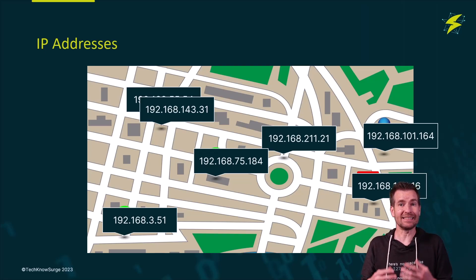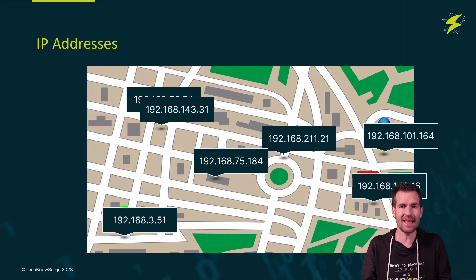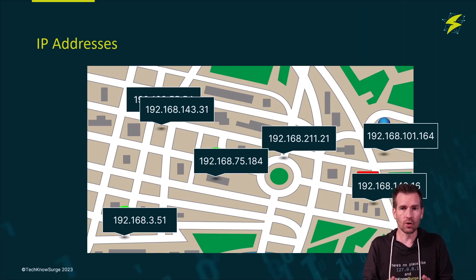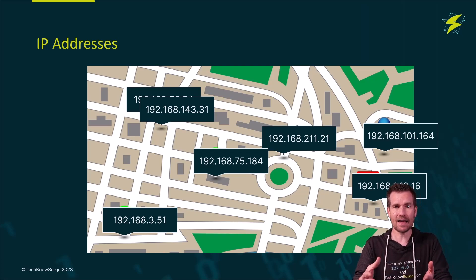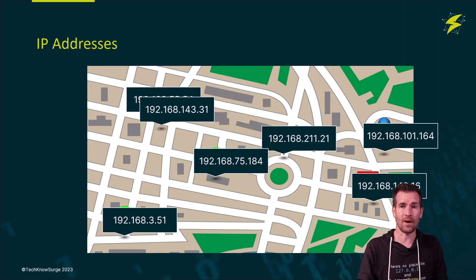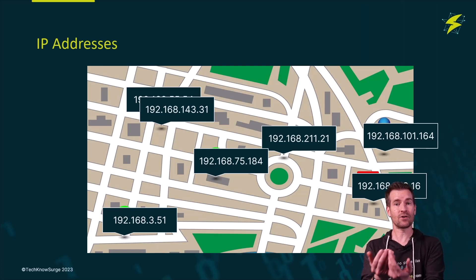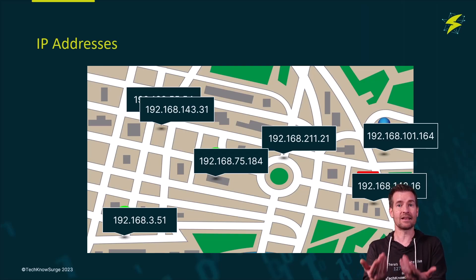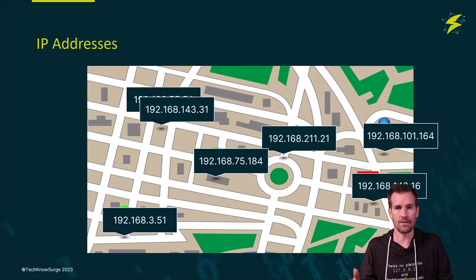An IP address is just that — it's a type of address. It's an address for your different devices that are out on these networks. What it does is it allows traffic to be routed to and from your device to get to other devices and resources that are out there. So as an example, if you go to a website, what you're doing is you're accessing that website and that traffic is getting routed to that website via an IP address. It finds that website and then for that traffic to get back to you, it needs to know your IP address. So IP addresses are used out there in order to locate different resources on these different networks.